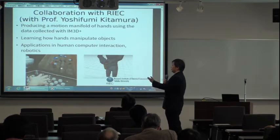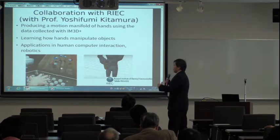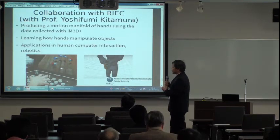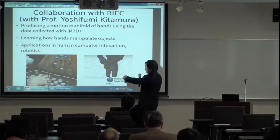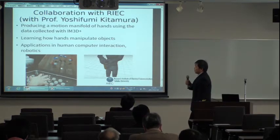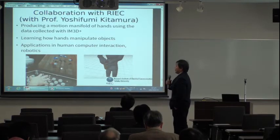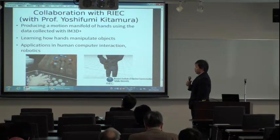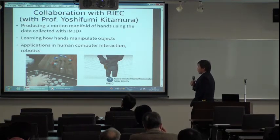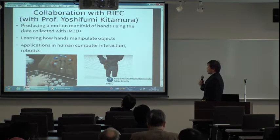We are collaborating with Professor Kitamura's lab because we are interested in grasping and manipulating objects. There is a motion capture system here that can capture fine movements of the fingers, which are very useful for generating motions like opening a cup or using tools — motions that are very difficult to capture with existing motion capture systems. We can capture lots of finger motion, train the neural network on it, and then use it for controlling robots to perform similar manipulations.